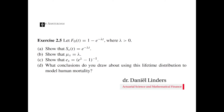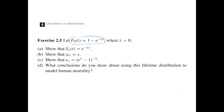In exercise 2.5, we have the function f0, which is the distribution function of the random variable t0. Using this distribution function, we will show that the survival function of an x-years-old is given by this expression, and the force of mortality of an x-years-old is a constant given by this expression.